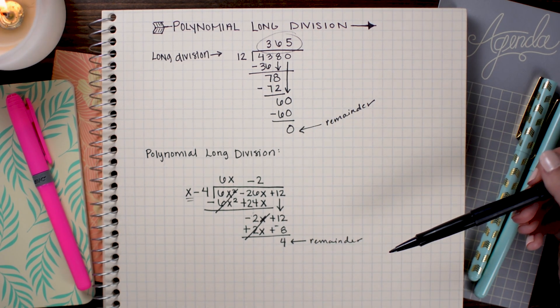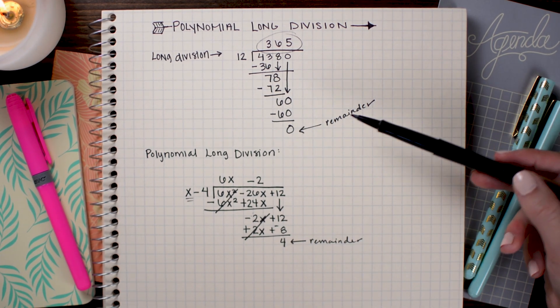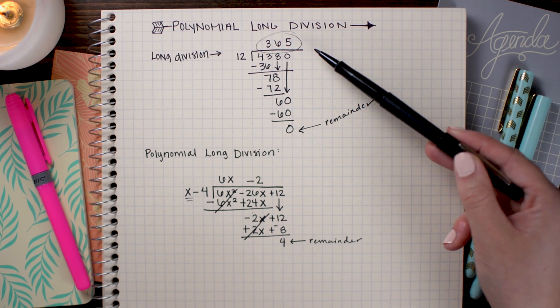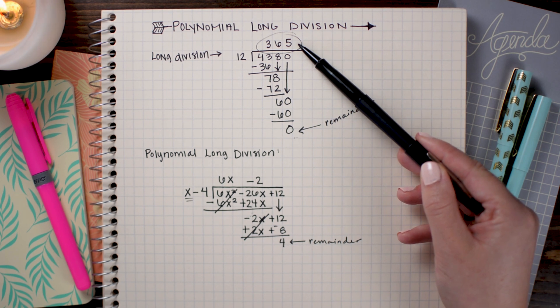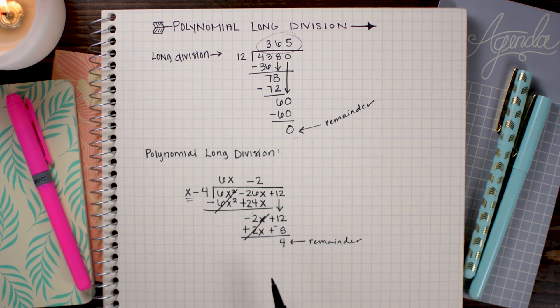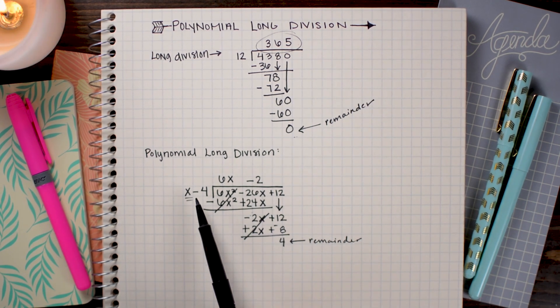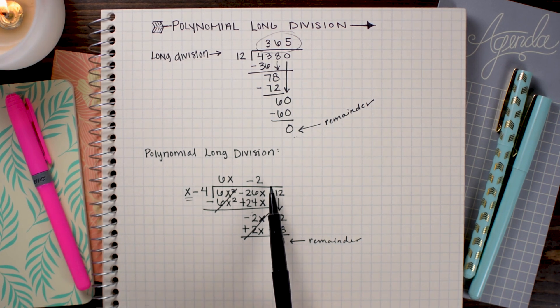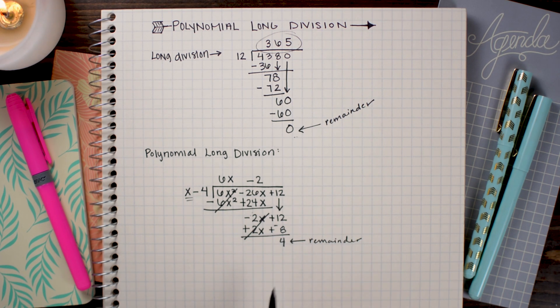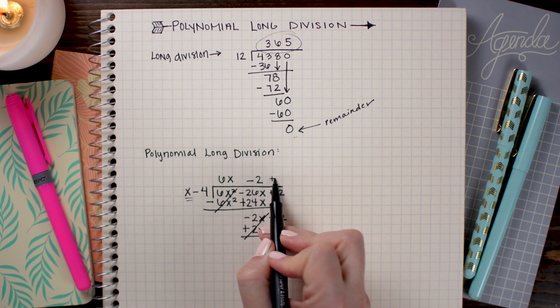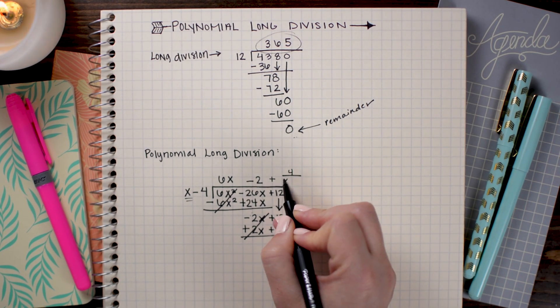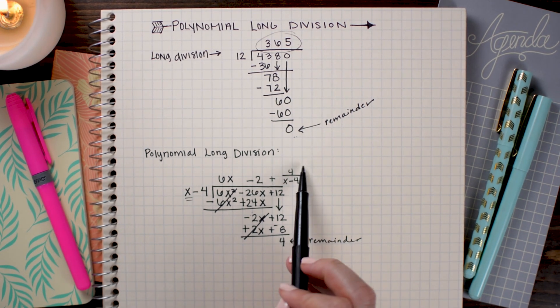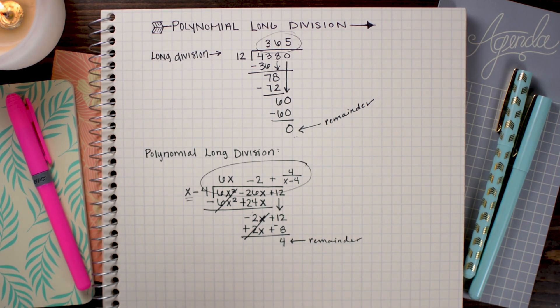Now this is going to work exactly the same as if you had a remainder up here. If we had a remainder on this number, we would simply add the remainder over the divisor onto our number. We're going to do the exact same here. We're going to take the remainder, write it over the divisor, and then instead of just appending it to it, we're going to write a plus sign since we're working with a polynomial. So that's going to look like +4 divided by (x - 4). So that is the answer to your polynomial long division.